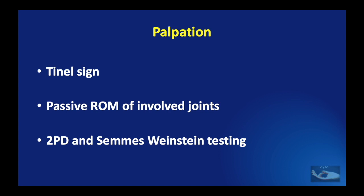In a case of radial nerve injury, the role of palpation covers three particular points. The first is eliciting the Tinel sign. The second is eliciting the passive range of movement of the involved joints. The third is two-point discrimination and Semmes-Weinstein testing.